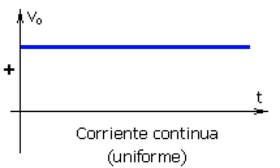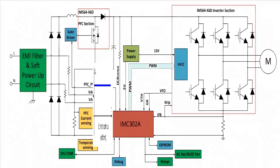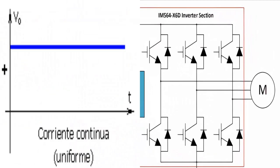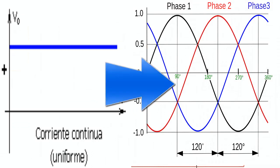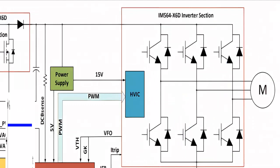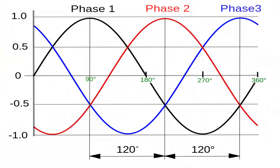The direct current with the appropriate voltage reaches the Intelligent Power Module and is converted into three-phase current capable of varying the frequency and voltage as required by the compressor. Remember that three-phase current uses three cables to power a motor and exhibits excellent performance in these devices.